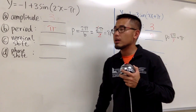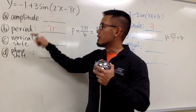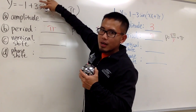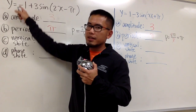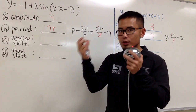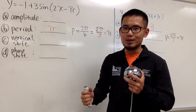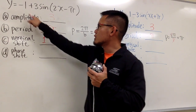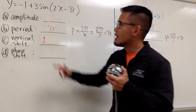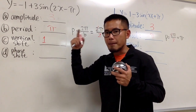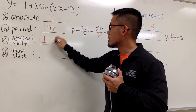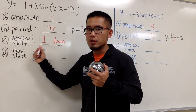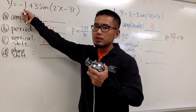Next, vertical shift. The vertical shift is the number all the way in the front in this form. Here we have negative 1. The negative 1 tells us we are going to move the graph 1 unit down below. For the vertical shift, don't just put down negative 1 — we need to know the direction. Take the absolute value of that number and tell me the direction, so: 1 unit down.